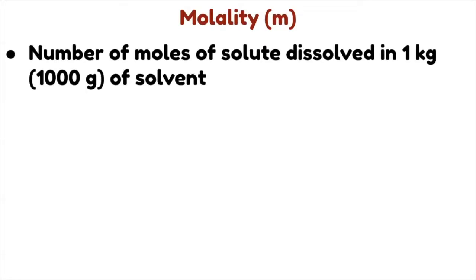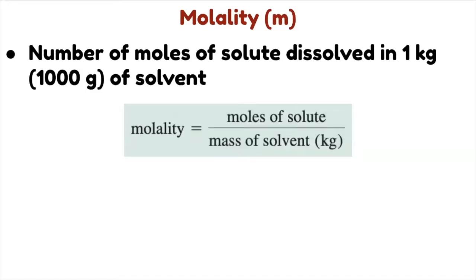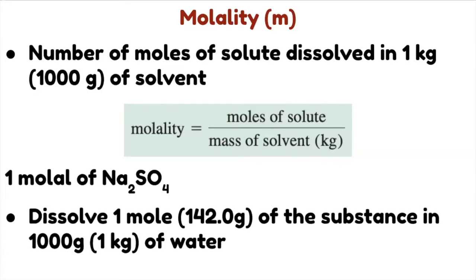Next, we have molality — the number of moles of solute dissolved in 1 kg of solvent. Note: it's solvent, not solution, and it's kilograms, not liters. For example, to prepare a 1 molal solution of sodium sulfate, dissolve 1 mole (142 grams) in 1 kg of water. Depending on the nature of solute-solvent interaction, the final volume may be greater or less than 1000 mL.